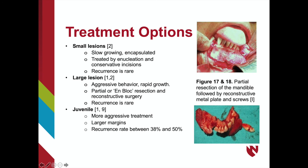Since ossifying fibromas are considered slow-growing, conservative surgical excision is the treatment of choice. The encapsulated nature encourages easy removal by enucleation with minor curettage. If the lesion presents with aggressive behavior noted by rapid growth and large size, more extensive surgery may be needed, including jaw resections followed by reconstructive surgery. In both cases, the recurrence rate is rare. During treatment of juvenile ossifying fibromas, more aggressive removal is required. Larger margins of resection are needed, and the recurrence rate is between 38% to 50%, so more frequent follow-up appointments are needed.